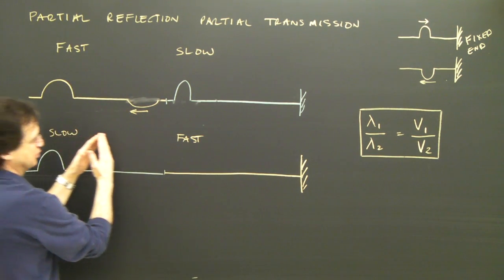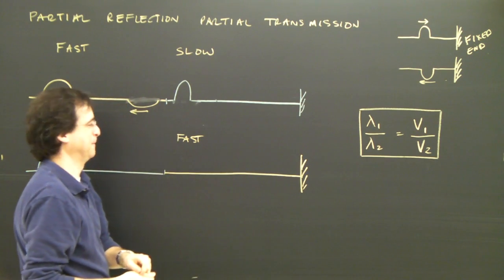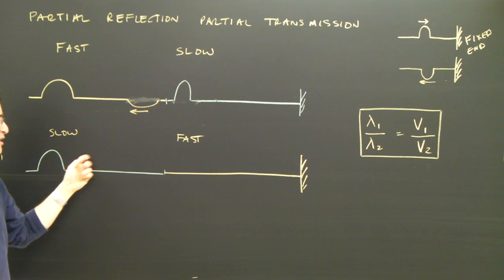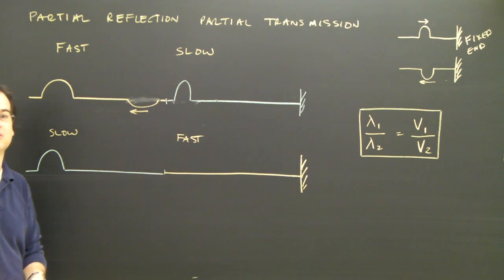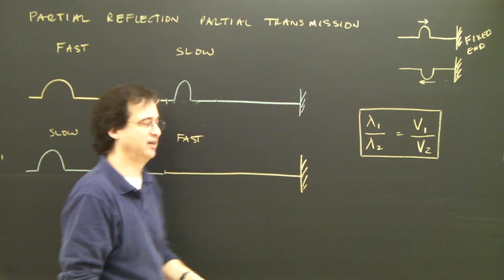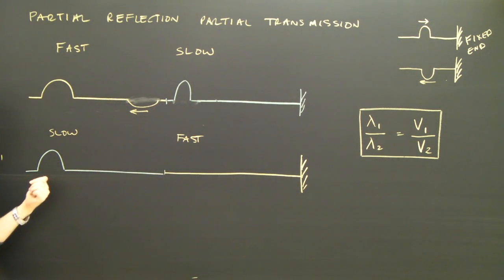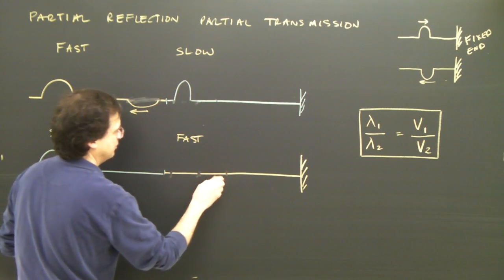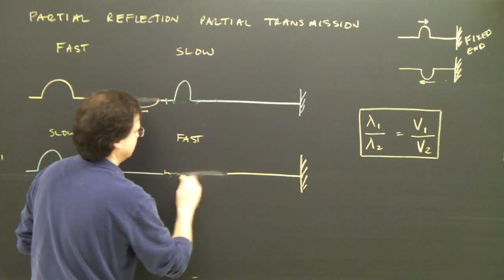So as the wave goes from slow to fast, it spreads out. So I would expect if the speed here is twice the speed here, then I could figure out that the wavelength here would be twice as big. You can always use this formula to figure out exactly what the wavelength is. So here's my wave. It's going to arrive in this material. It's going to get longer because it's going faster.